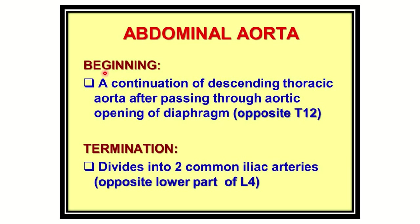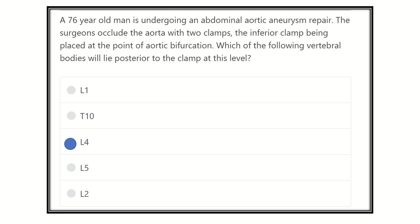The abdominal aorta is a continuation of the descending thoracic aorta. It passes through the aortic opening of the diaphragm at the level of T12 and terminates by dividing into two common iliac arteries at the level of the lumbar 4 vertebra. So our answer is the lumbar 4 vertebral level — that is the point of bifurcation of the abdominal aorta.